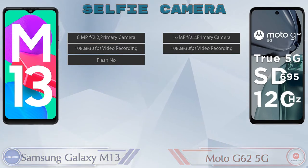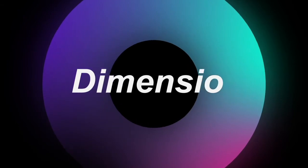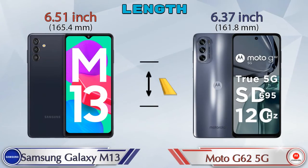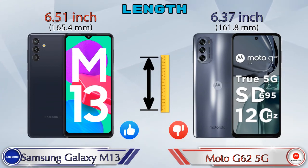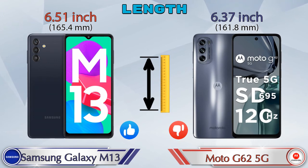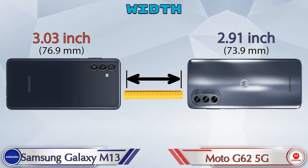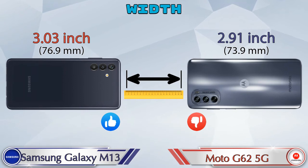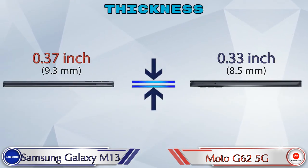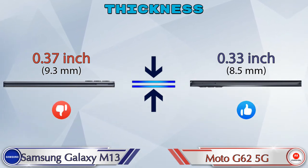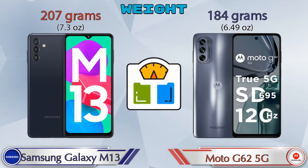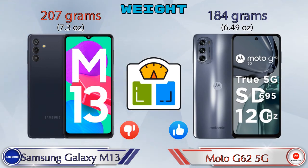Now let's check the details about dimensions. Talking about the length of both phones: Galaxy M13 is 6.51 inches and Moto G62 5G is 6.37 inches, which is less than Galaxy M13. Width: Galaxy M13 is 3.03 inches and Moto G62 5G is 2.91 inches, which is less than Galaxy M13. Thickness: Galaxy M13 is 0.37 inches and Moto G62 5G is 0.33 inches. Weight: Galaxy M13 is 207 grams and Moto G62 5G is 184 grams.